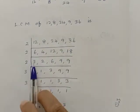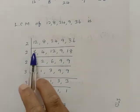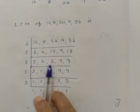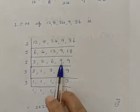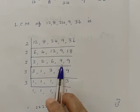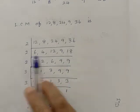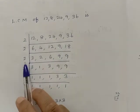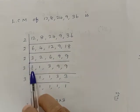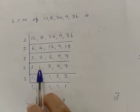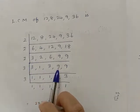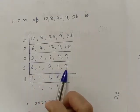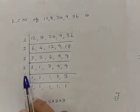Again by the 2 times table: 3 twos are 6, 2 twos are 4, 6 twos are 12, 9 is not possible so we write 9, and 9 twos are 18. Next pass: 3 is not possible, 1 twos are 2, 3 twos are 6, 9 is not possible, 9 is not possible.